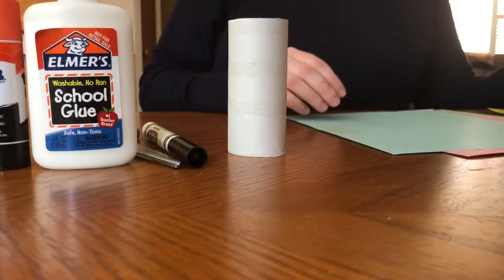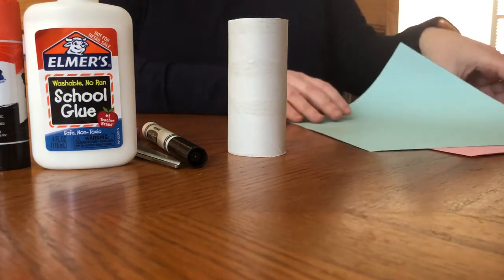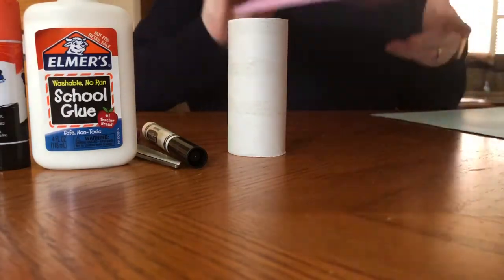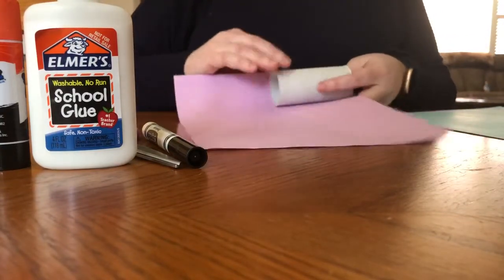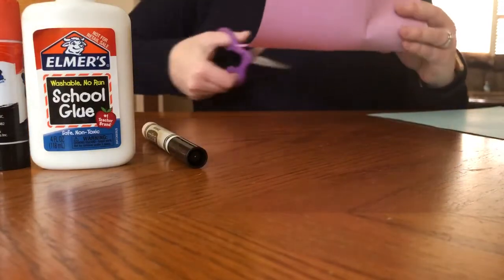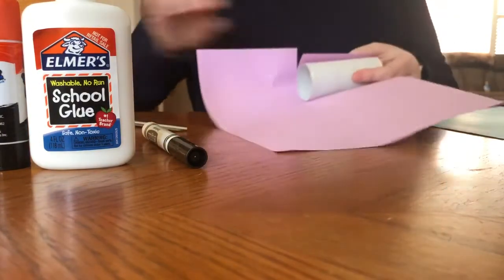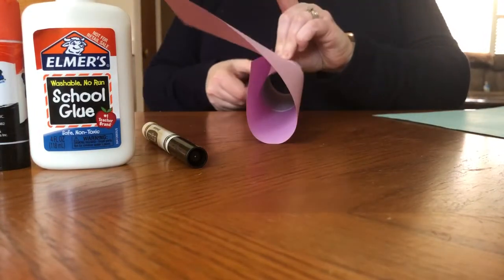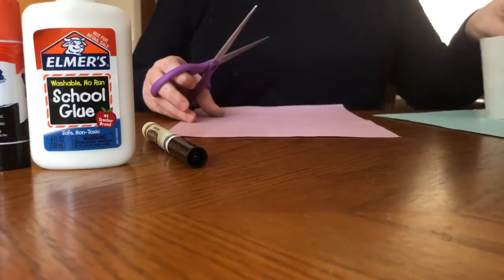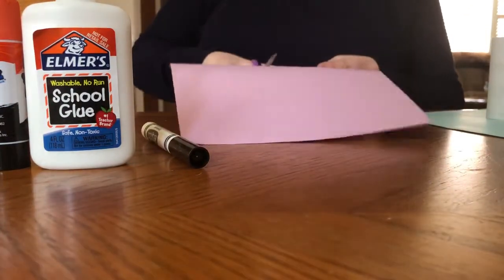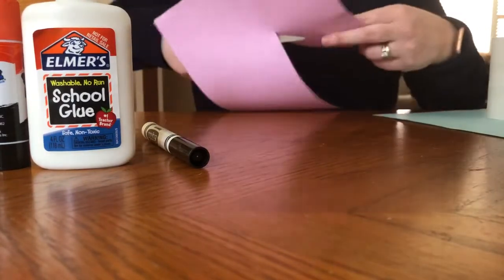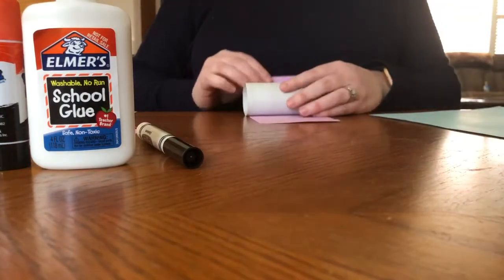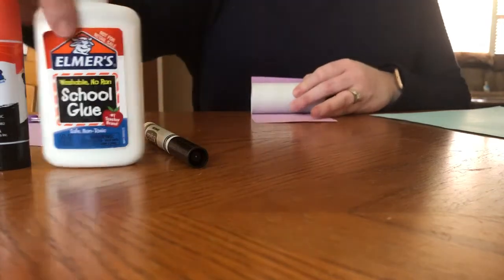So to get started, I'm going to pick one of my colors and I'm going to roll out and measure my toilet paper roll. Once I have that cut out, I'm going to glue it onto my toilet paper roll.